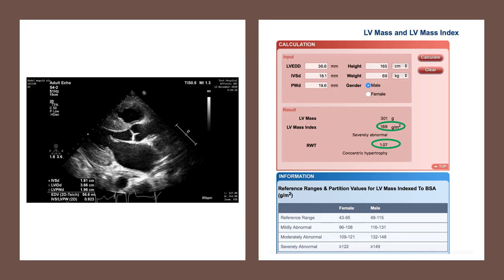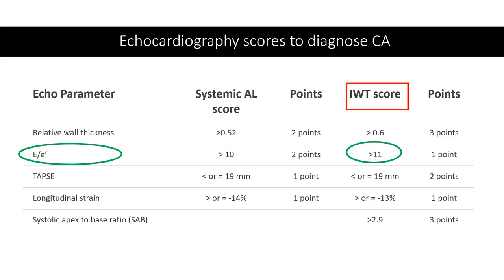We had an interventricular septum of 18 mm, a posterior wall thickness of 19.6 mm, and a left ventricular end-diastolic diameter of 38.6 mm. Using an online calculator with the patient's height and weight, we get the LV mass index and, more importantly, the relative wall thickness of 1.07 — concentric hypertrophy. Since 1.07 is more than 0.6, our patient clearly qualifies to take these three points.